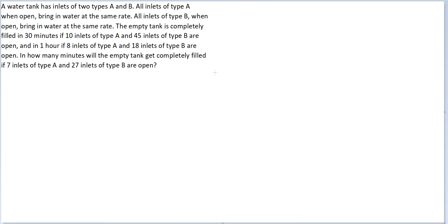Let's look at this question. A water tank has inlets of two types, type A and B. All inlets of type A when open bring in water at the same rate. All inlets of type B when open bring in water at the same rate. The empty tank is completely filled in 30 minutes if 10 inlets of type A and 45 inlets of type B are open.